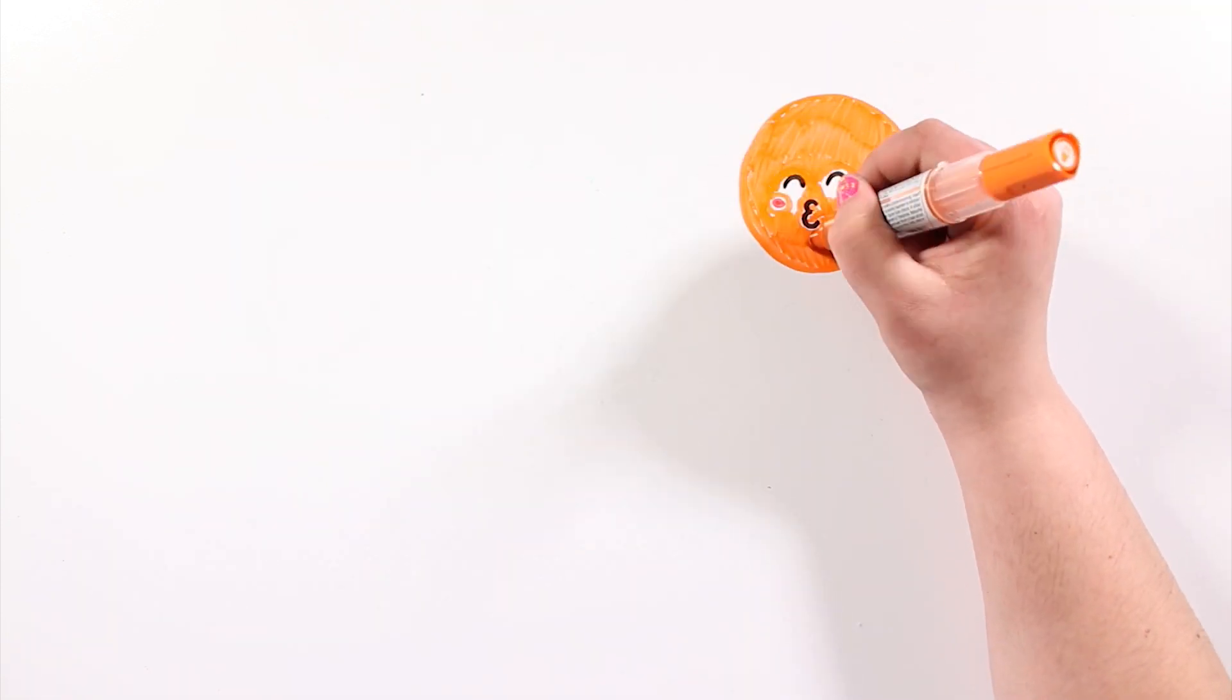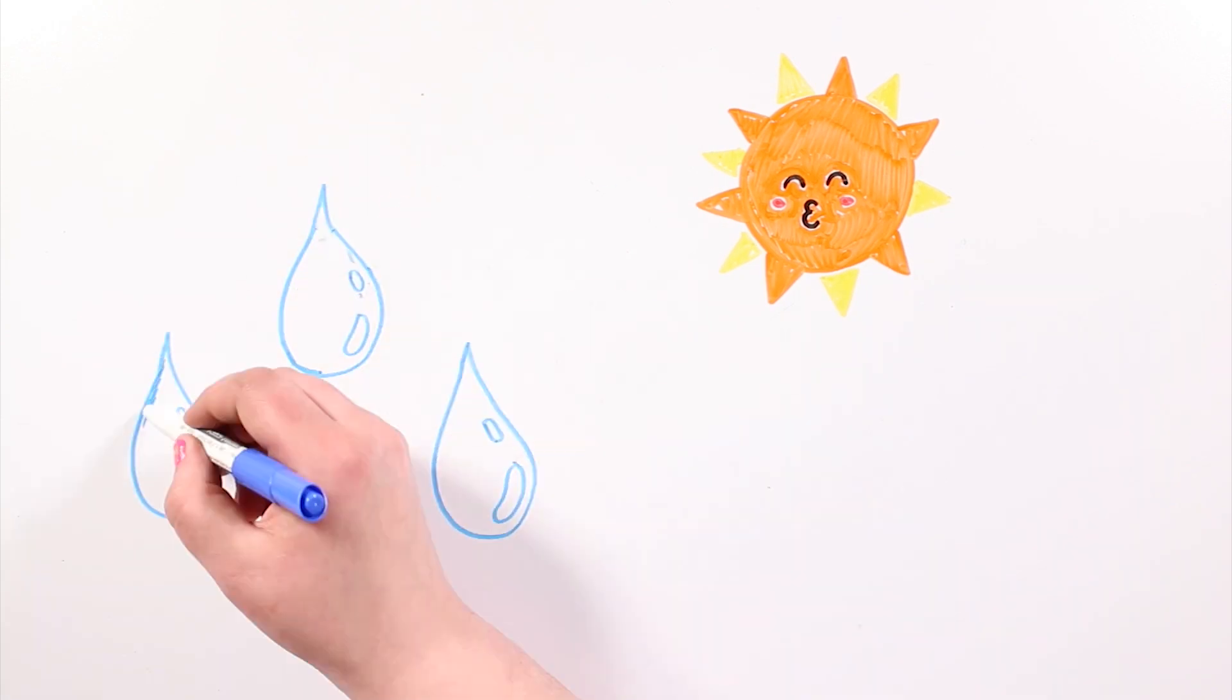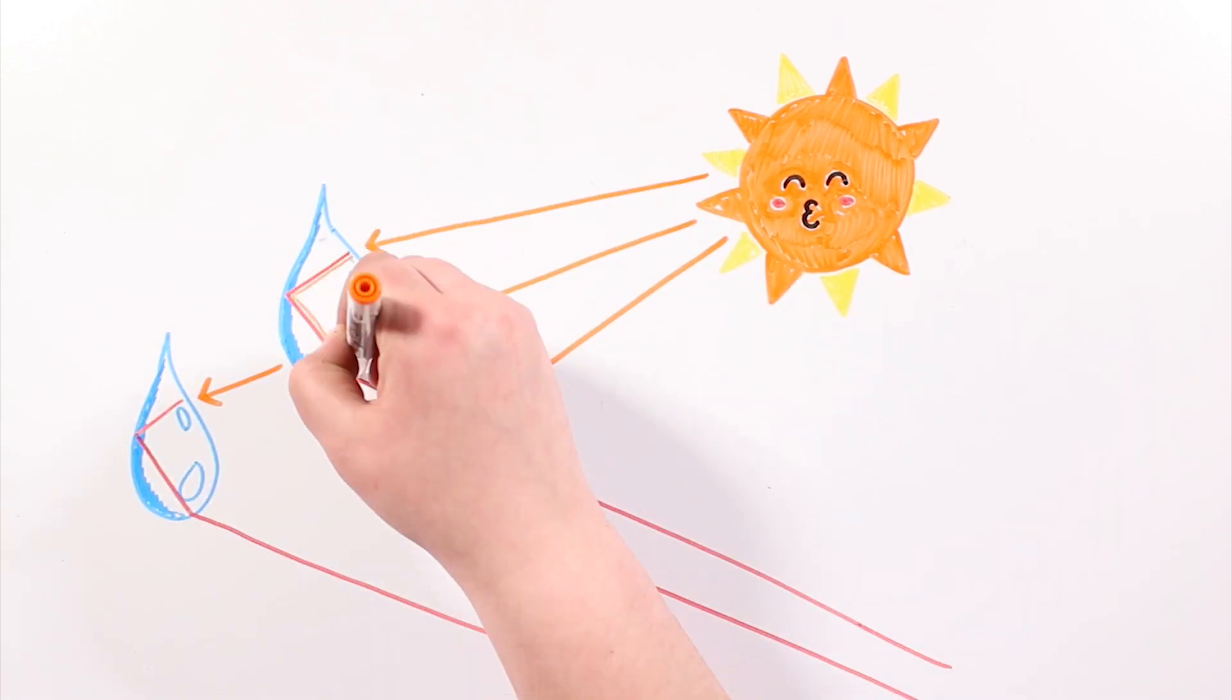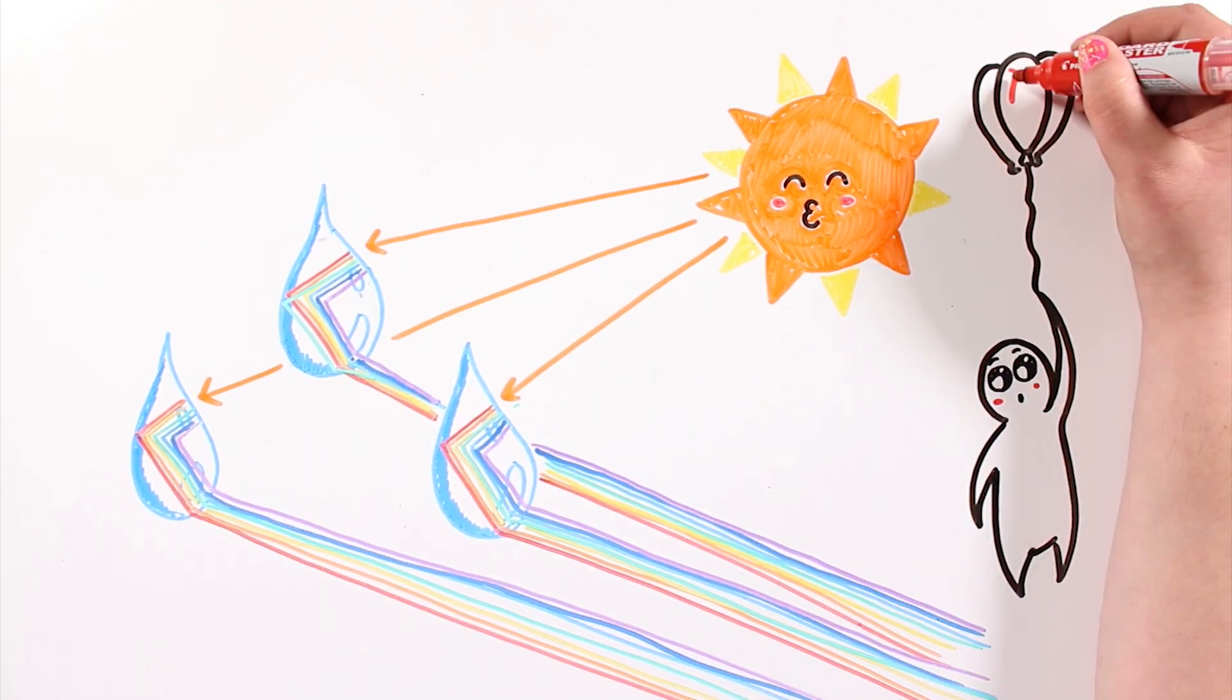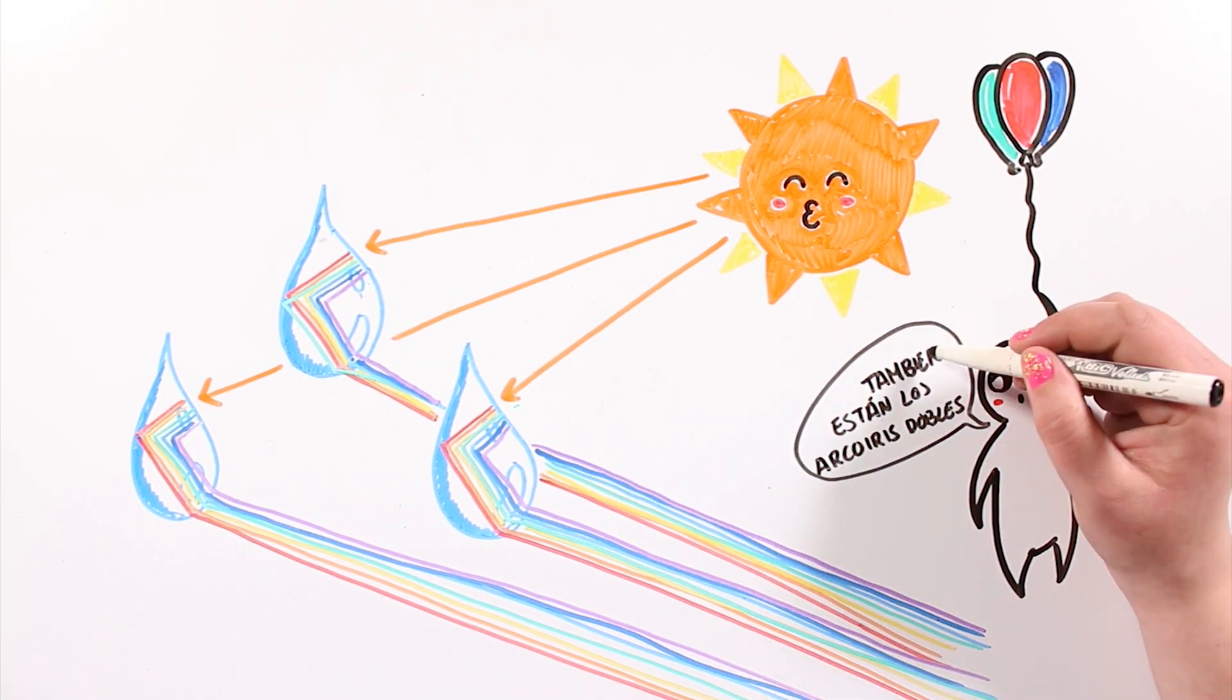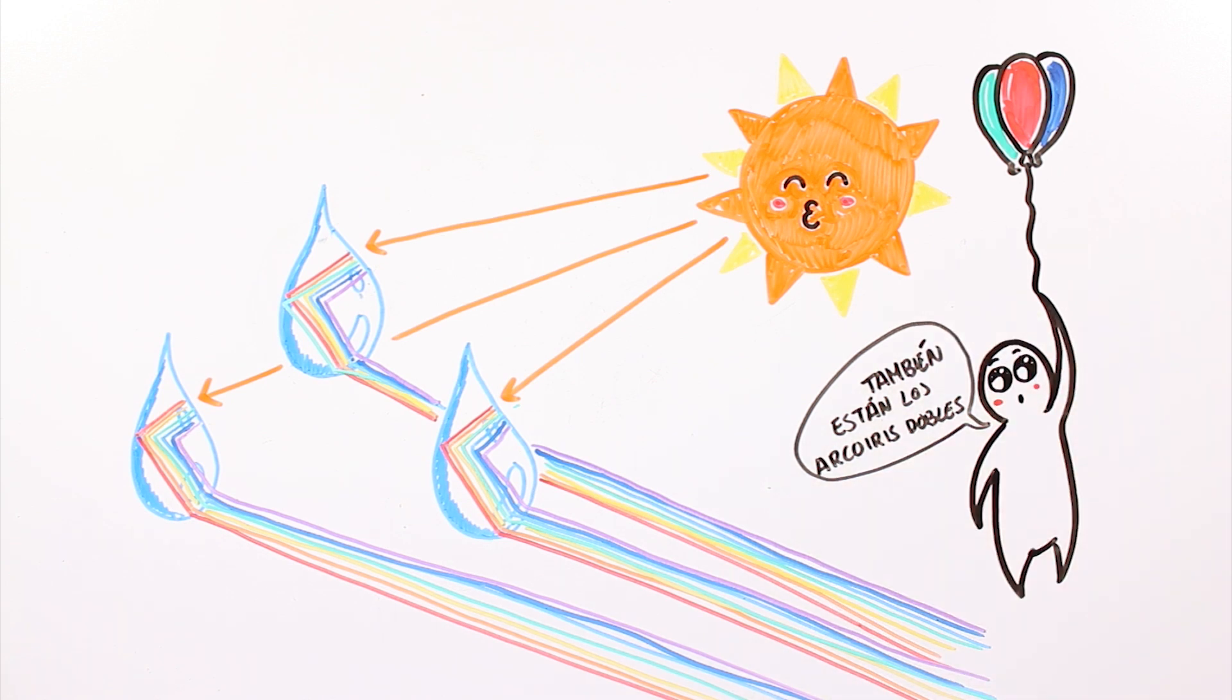The light goes into the raindrop, changes its direction and splits up. The water in the atmosphere acts as a translucent prism. It's reflected towards the inside and the back of the raindrop, and when it comes out, it splits up again into all those colors.